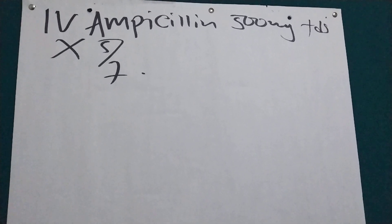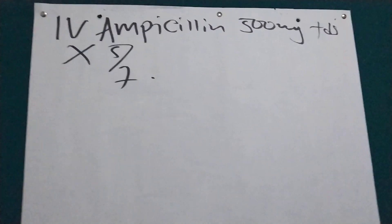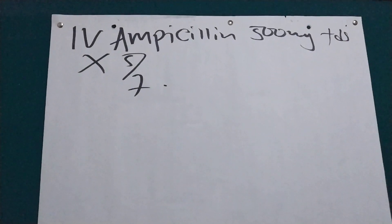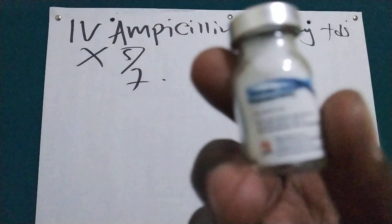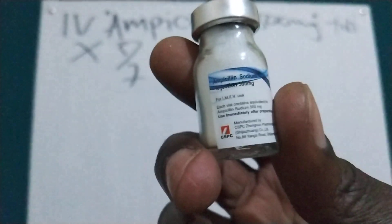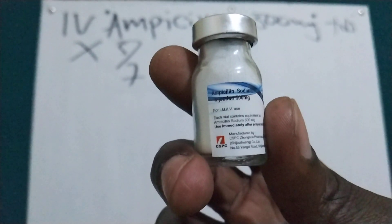So we are going to dilute the one which is having 500 milligrams of the vial. As you can see from here, this is ampicillin 500 milligram.